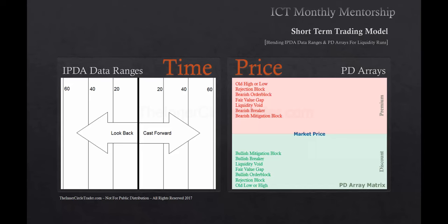If price is in a premium market, working from the market price up, we will be looking for a bearish mitigation block, a bearish breaker, a liquidity void, a fair value gap, a bearish order block, a rejection block, or an old high or old low. For a discount market, working from market price and below, we would be looking for a bullish mitigation block, a bullish breaker, a liquidity void, a fair value gap, a bullish order block, a rejection block, an old low or an old high — moving from market price up in the order listed in the premium data arrays.